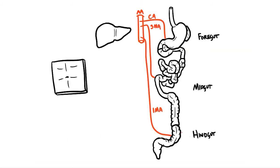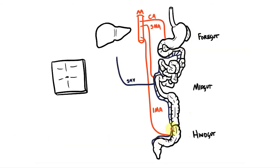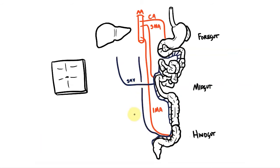So what about the venous drainage from these regions? Generally speaking, if we have a named artery going to a region, the vein that comes back will have the same name. So the midgut is drained by the superior mesenteric vein and the hindgut is drained by the inferior mesenteric vein.